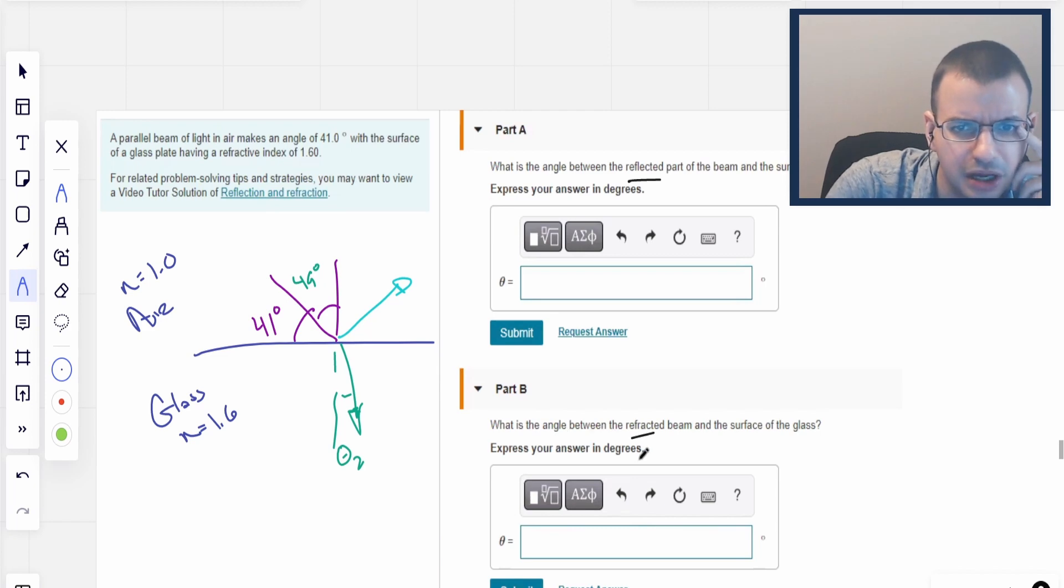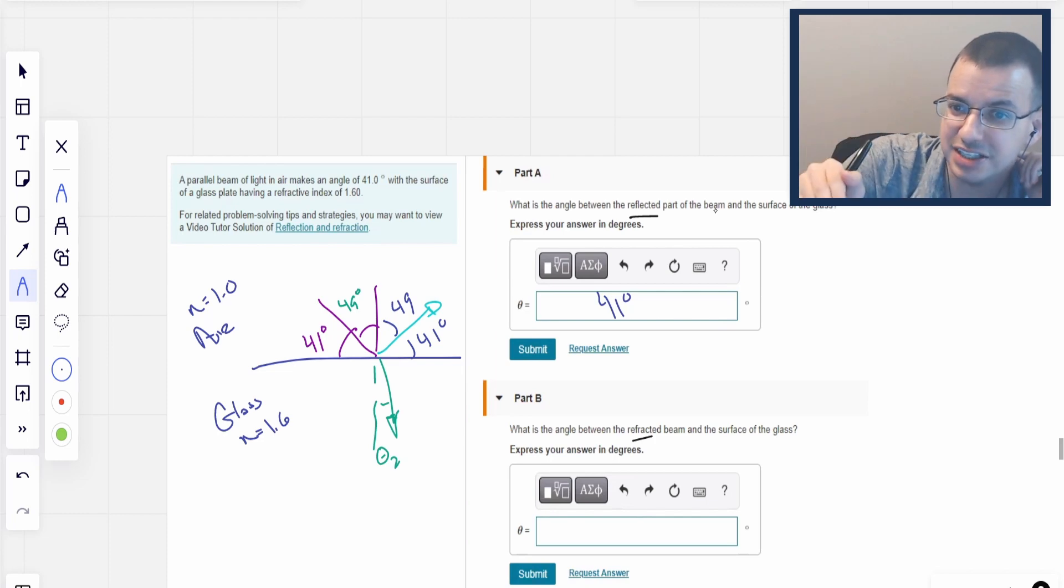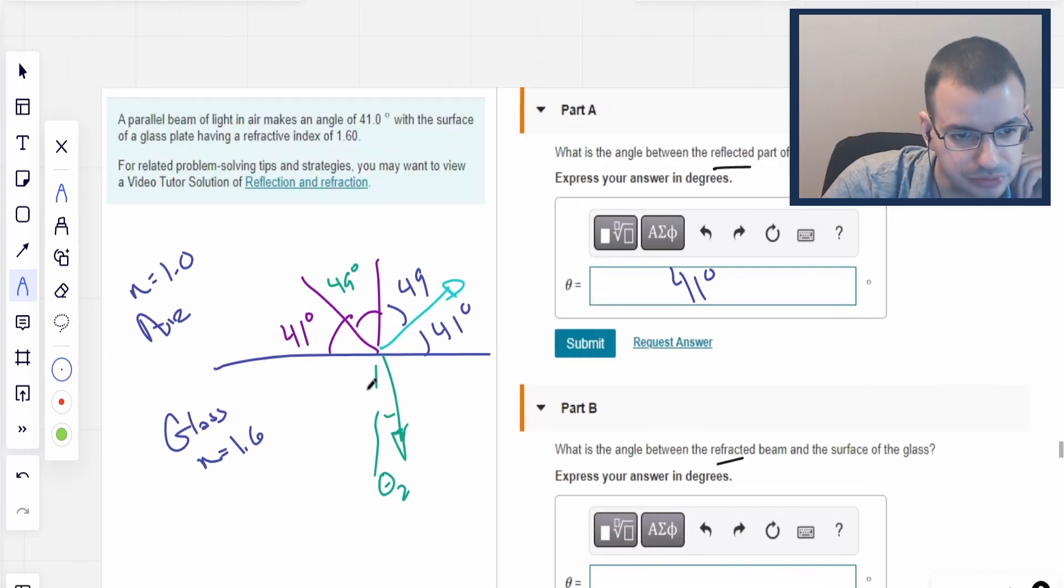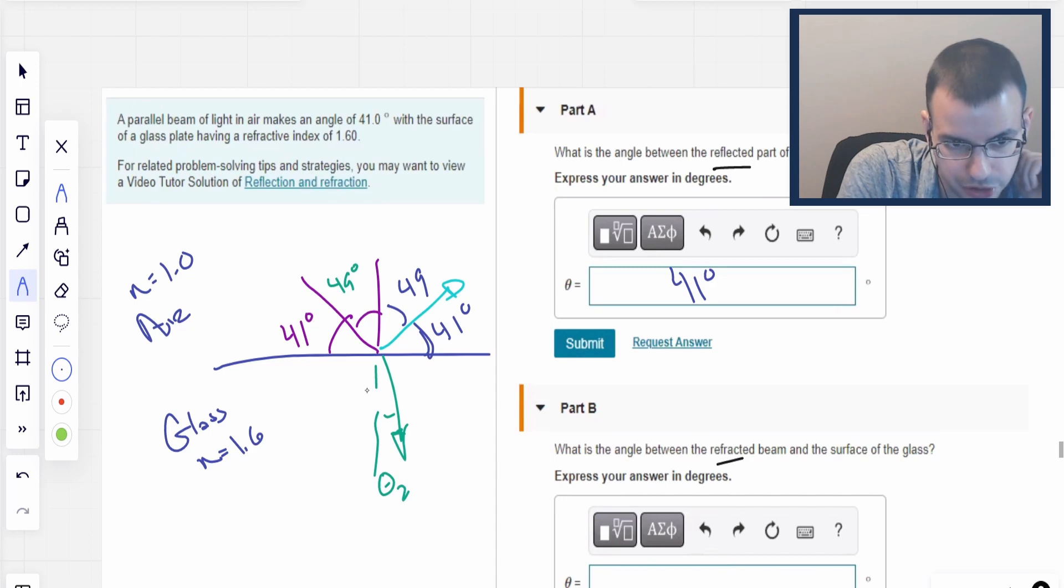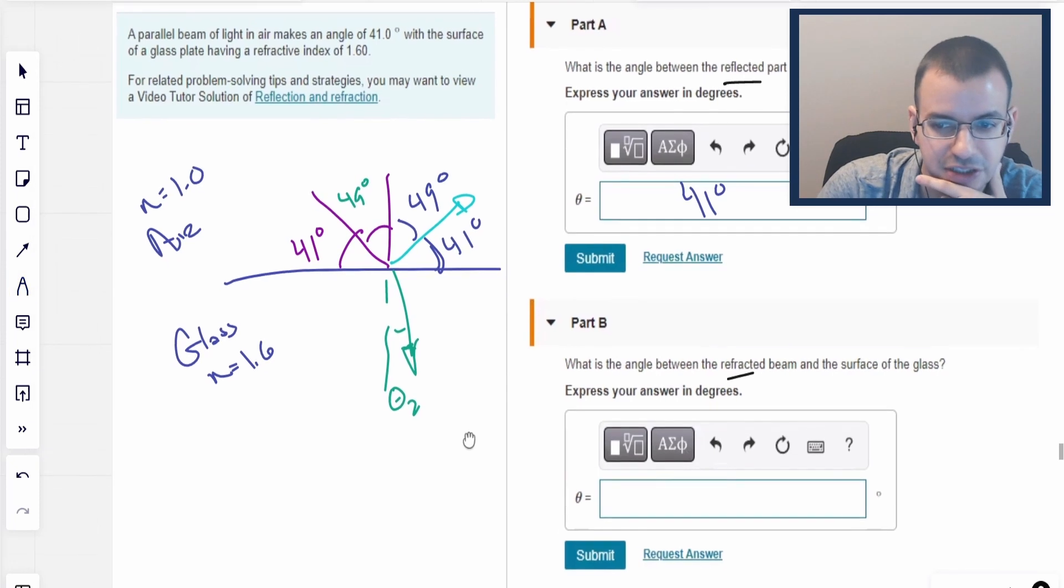Light then bends down this way at some other angle theta 2. And what's also going to happen is light is going to both reflect and refract. Some of the light will reflect, some of it will refract. Now not necessarily all of it will refract. You have something called complete internal reflection, which means that portion can be zero. So don't assume that it always has to be some amount that's non-zero.